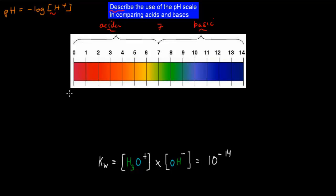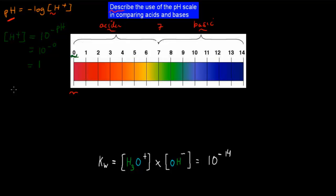If we have a pH of 0, how could we figure out the concentration of hydrogen ions? We can rearrange the formula: the hydrogen ion concentration equals 10 to the power of minus pH. So for a pH of 0, we do 10^-0, which gives us 1. That means we have 1 mole per liter of hydrogen concentration in that solution.